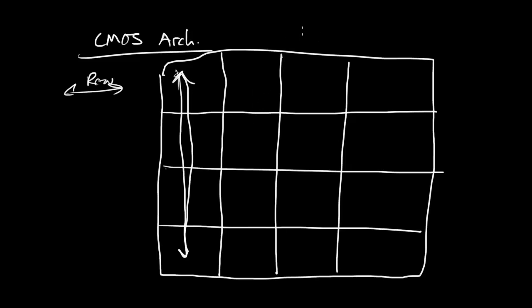Let's draw the same photon that I drew for the CCD coming in and create an electron hole pair in that pixel. What I'm going to do is instead of shuttling that charge all the way down and out through a serial shift register, I'm going to integrate that charge on a capacitance right there in the pixel. There's a capacitance there, right there in the pixel.